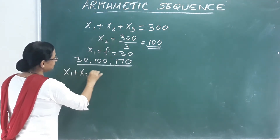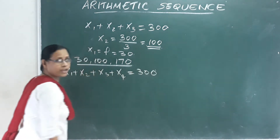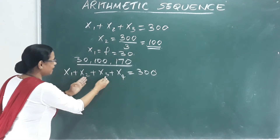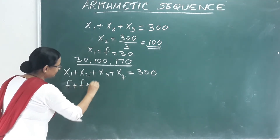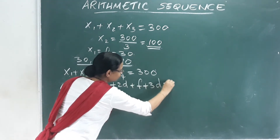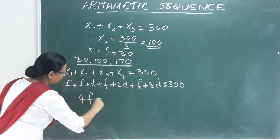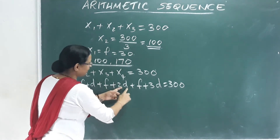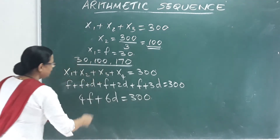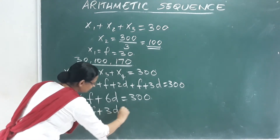For four terms: x1 plus x2 plus x3 plus x4 equals 300. Using the arithmetic sequence property, we can write this as 4 times the middle value. Taking 2 outside, we get 2F plus 3D equals 150.